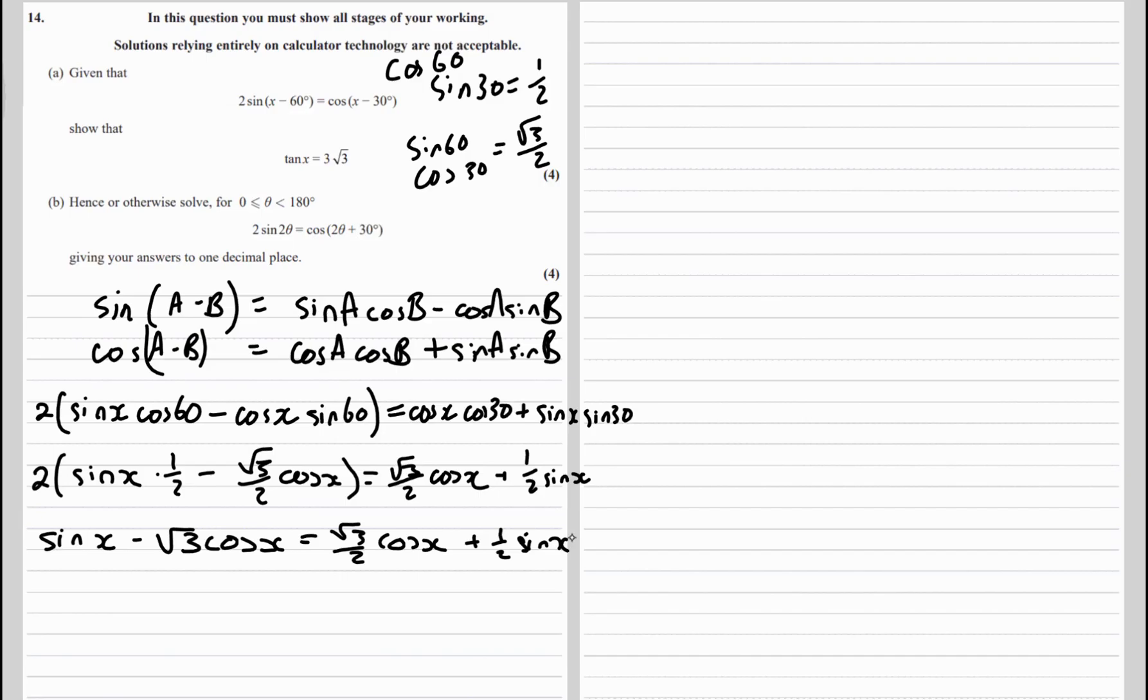So let's take half sine x away from both sides. So one sine x take away half sine x is half sine x, and root 3 over 2 cos x plus root 3 cos x, so root 3 plus half root 3 will be one and a half root 3s or 3 root 3 over 2 cos x.